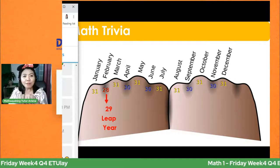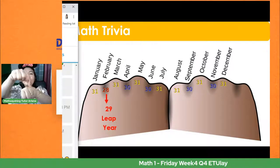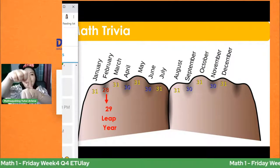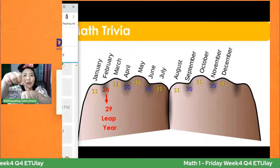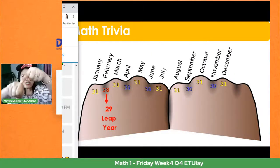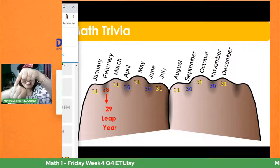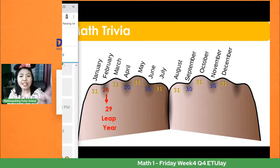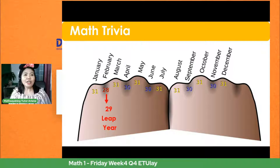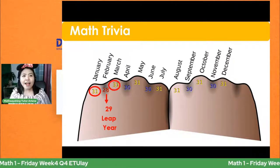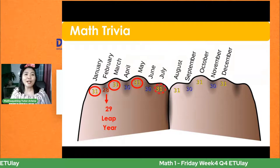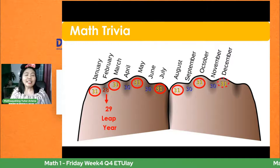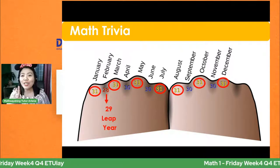Yung Enero, bawat joint na ito — Enero, Marso, Mayo, Hulyo, Agosto, Oktubre, at Disyembre — lahat yun ay mayroong 31 days. Tingnan nyo dito sa picture natin. Ang January, March, May — tingnan nyo yung binibilugan ko — July, August, October, December — lahat sila ay may 31 days.